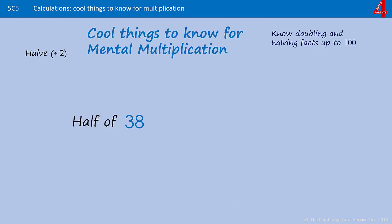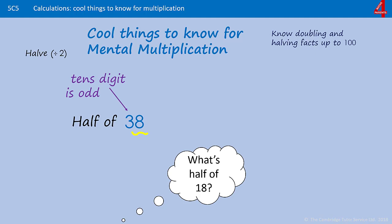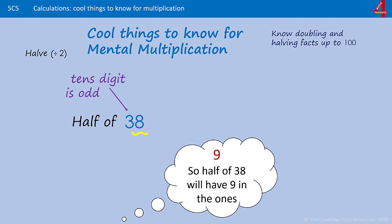We'll practice just a few of these where the tens is an odd digit. Half of 38. You might be tempted to think because there's an 8 in the ones, half of that number will have a 4 in the ones. But because the tens digit is an odd number, we have to think again. If you say to yourself, there's an 8 in the ones and the tens digit is odd, so I need to think what's half of 18, not what's half of 8. Half of 18, that's 9. So my number, half of 38, is going to have a 9 in the ones. If I remember that half of 30 is 15, then half of 38 must be 19.